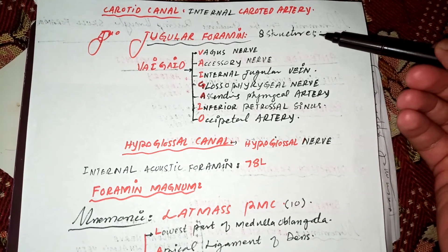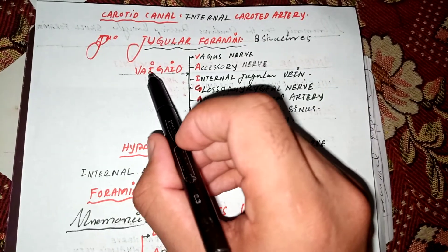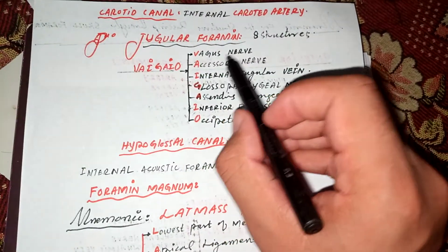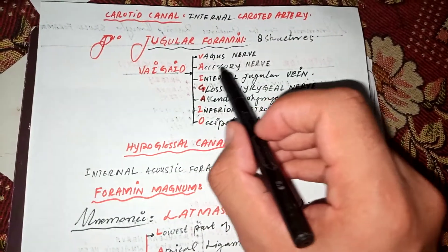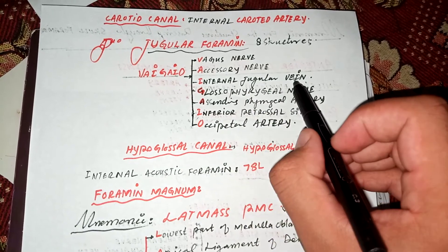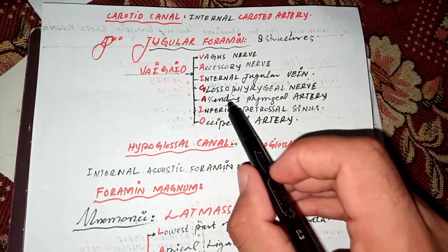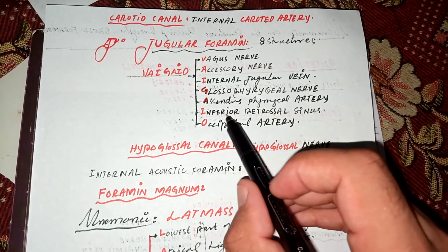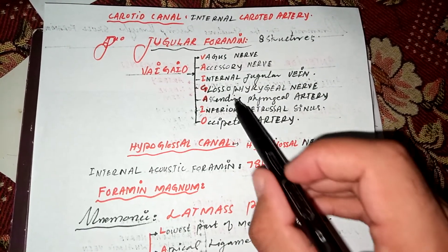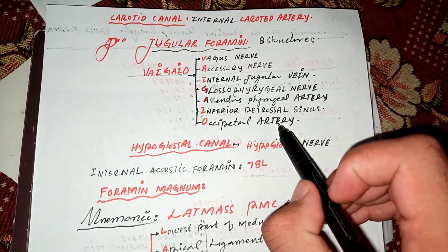Eight structures pass through the jugular foramen. We have a mnemonic for memorizing these eight structures: V for the vagus nerve, A for the accessory nerve, I for the internal jugular vein, G for the glossopharyngeal nerve, A for the ascending pharyngeal artery, I for the inferior petrosal sinus, and O for the occipital artery.